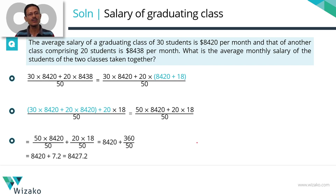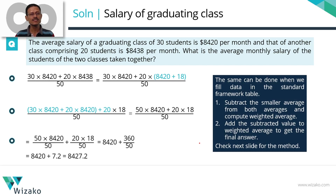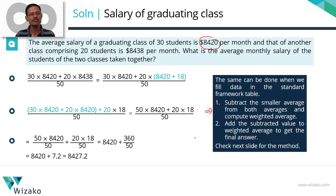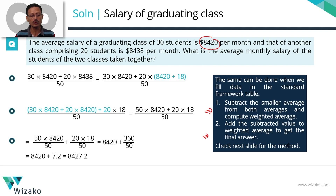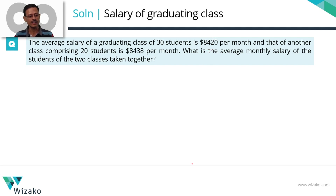Is this the only way, or do we have something better? The same can be achieved without writing all of these things. What we'll do is subtract the smaller number — in this case 8420, which is the smaller of the two averages — from both numbers, and then compute the weighted average using the standard framework. Finally, after getting that intermediate weighted average, we'll add 8420 back to get the final answer.